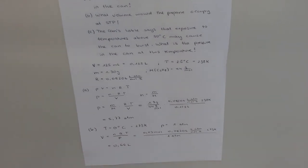For Part C, the can's label says that exposure to temperatures above 50 degrees Celsius may cause the can to burst. What is the pressure in the can at this temperature? Our temperature is 50 degrees Celsius, which is 323 Kelvin.